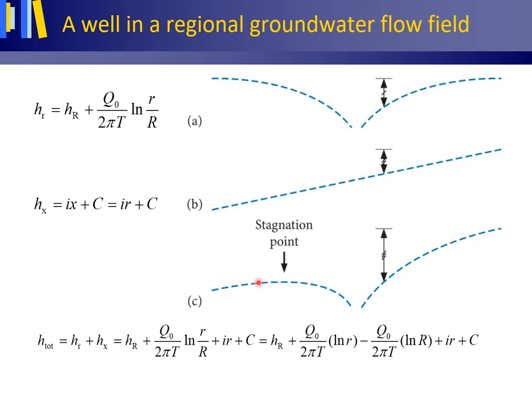Physically, the hydraulic head H_total in the drawdown curve of figure C is constructed by summation of the influences of the pumping well (figure A) and the regional groundwater flow field (figure B). Thus, graphically, the hydraulic head H_total in figure C is derived by adding together h(r) of figure A and h(x) of figure B. Mathematically, h_total is the summation of h(r) — the Dupuis equation — and the equation for h(x) as shown here.